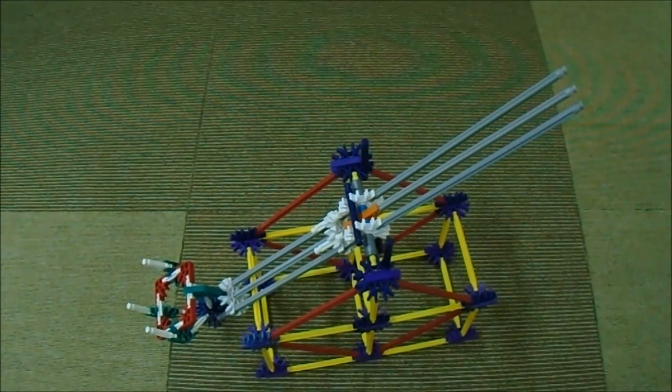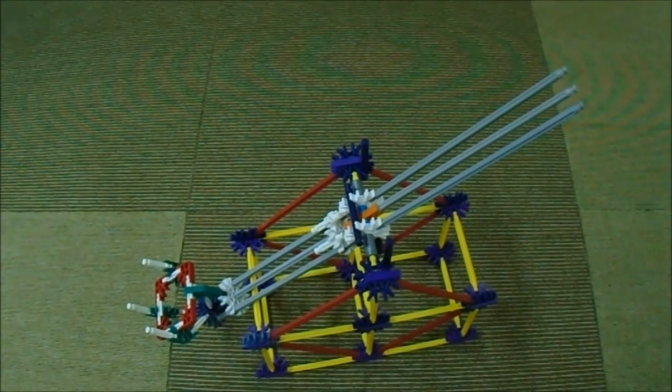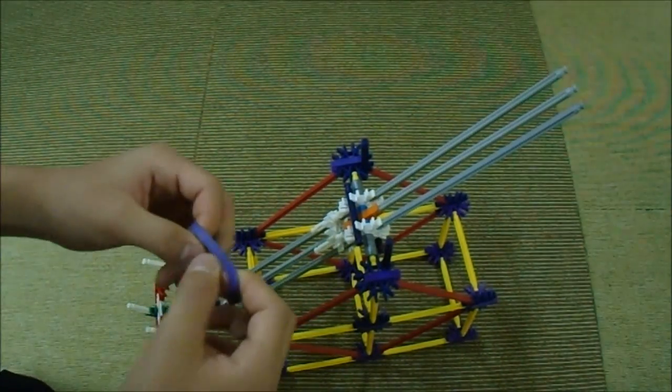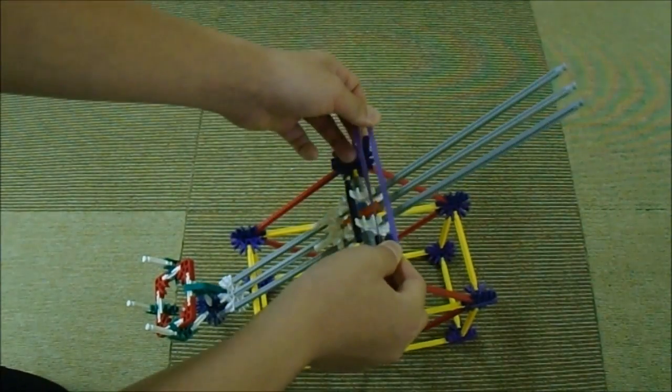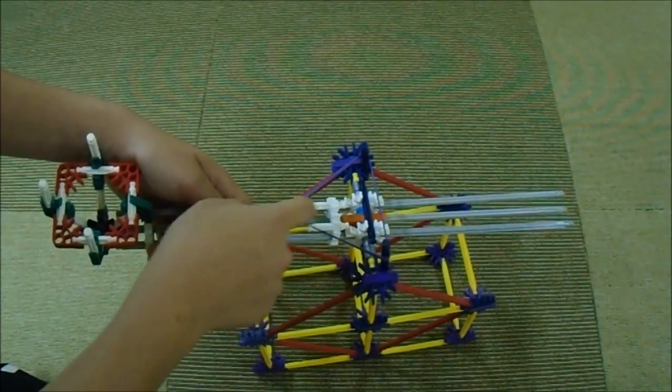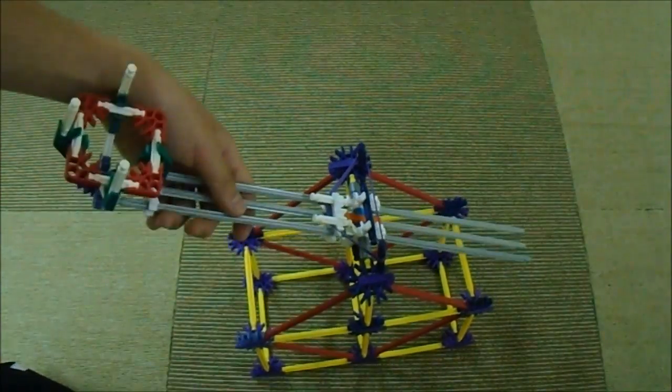Let me show you how to connect the elastics onto your final project. I'll start with the one that isn't attached to the white snowflake. So, you'll want to slip it on these blue rods, and then take one end and put it here. Like this.